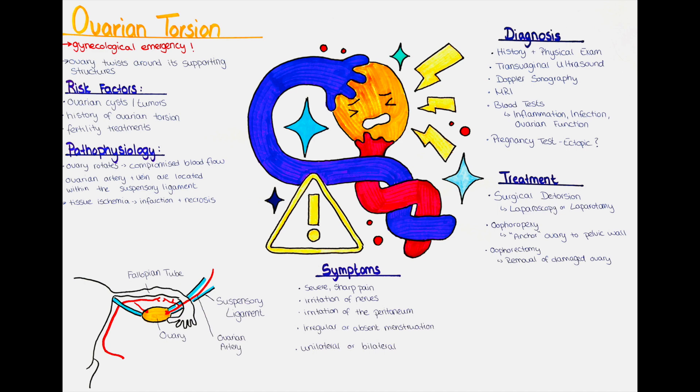In cases where the diagnosis is uncertain or the condition is severe, surgical exploration may be necessary for both diagnosis and treatment. This may involve laparoscopy or laparotomy during which we can directly visualize the ovaries and determine if there is torsion present.